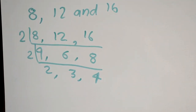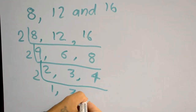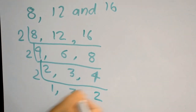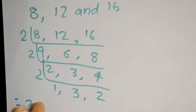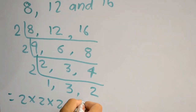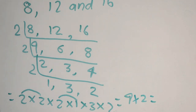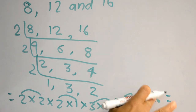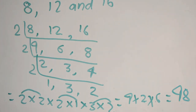Now we have two even numbers — 2 and 4 — and one odd number 3. Dividing by 2 again gives 1, 3, 2, and then 1, 3, 1. All remaining values — 2, 2, 2, 2, 3, and 1 — are prime numbers. So the LCM is 2 times 2 times 2 times 2 times 3, which equals 48. The LCM of 8, 12, and 16 is 48.